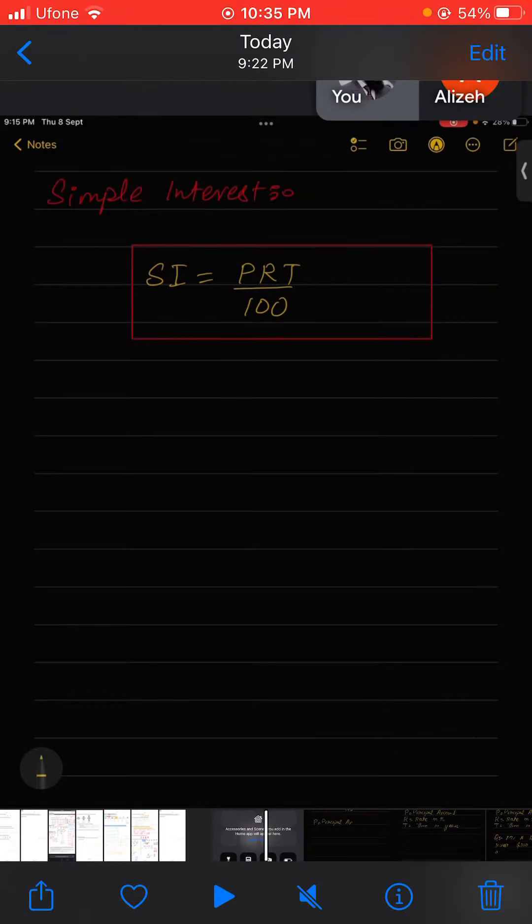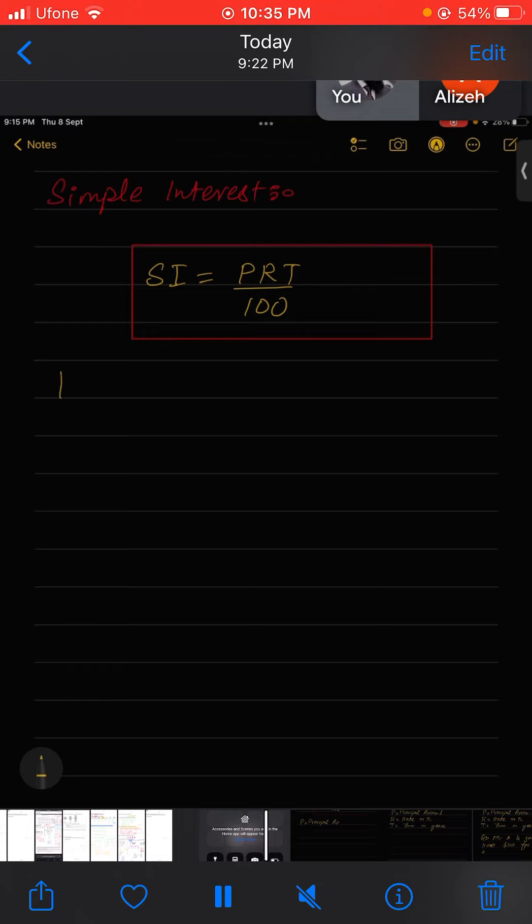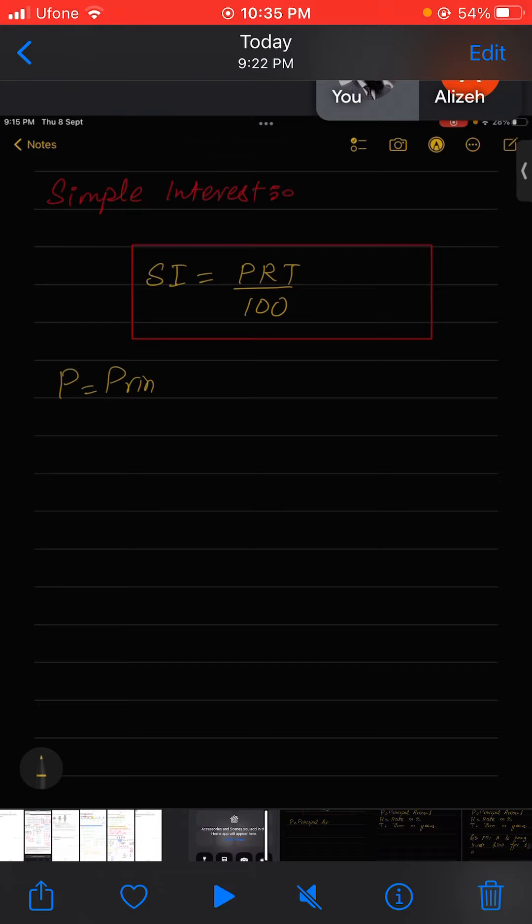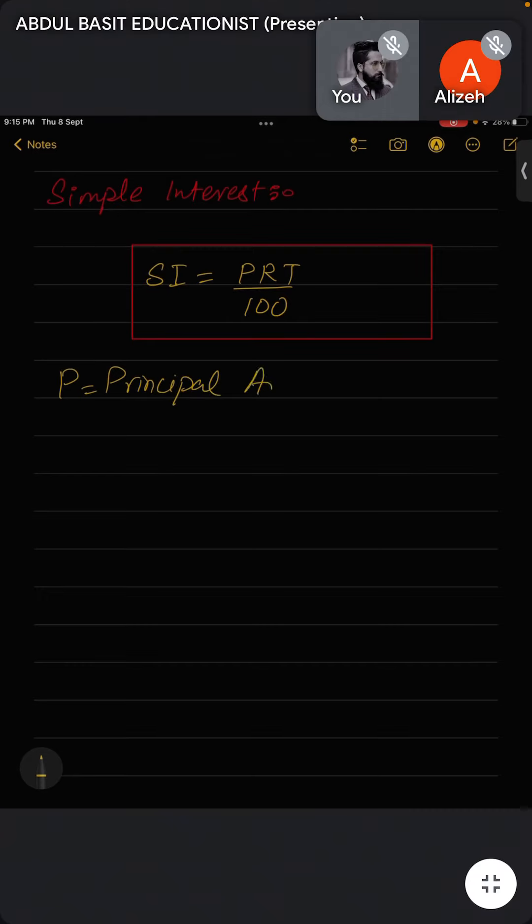Hello everybody, assalamu alaikum. In this video I'll be teaching you about simple interest and compound interest. As you can see, in simple interest, SI = PRT divided by 100, where P is the principal amount, R is the rate, usually in terms of percentage, and T is time in years.